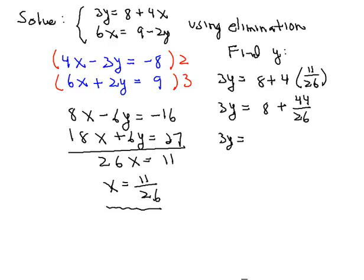3y is equal to now we'll get a common denominator here so expressing 8 as a fraction over 26 becomes 208 over 26 plus 44 over 26. So next we have then 3y is equal to 252 all over 26.